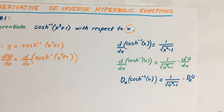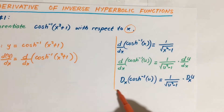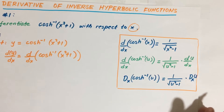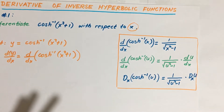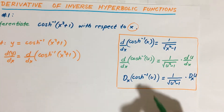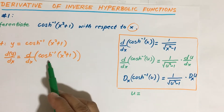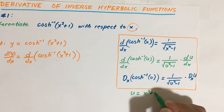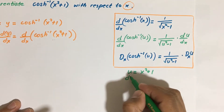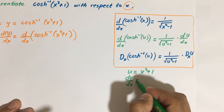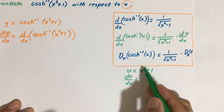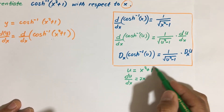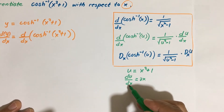Using this formula, let's identify from our given what u is. Our u is equal to x squared plus 1. Then the derivative of u with respect to x — applying the sum rule and power rule — the derivative of x squared is 2x, and the derivative of the constant 1 is 0. So the derivative of u with respect to x is equal to 2x.